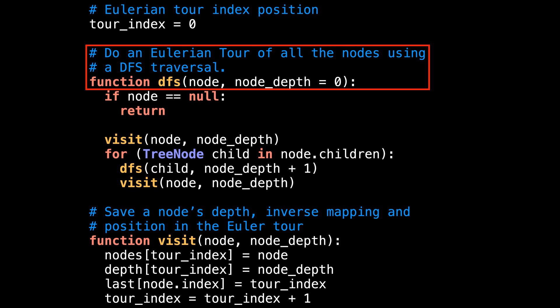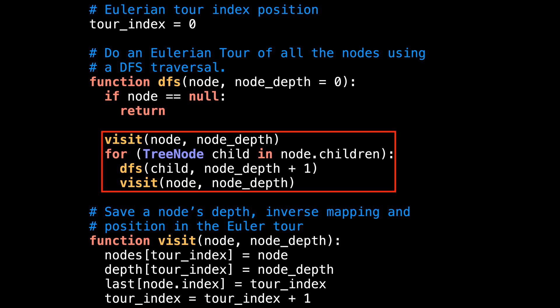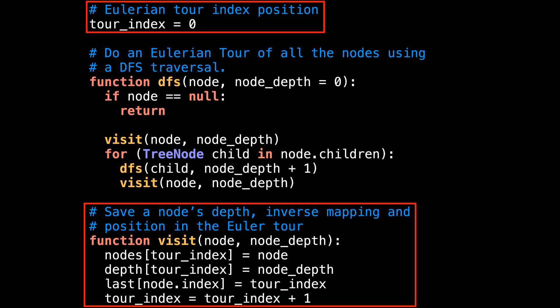The depth first search method is the one that actually performs the Eulerian tour. As parameters, it takes the current node and the depth of the node. When the current node becomes null, we know that we have reached our base case and can return. Otherwise, visit the current node and iterate over all its children recursively. The inner visit function call is interesting. What it says is after visiting the subtree, revisit the current node. This is essential to get the desired Eulerian tour effect to traverse the tree as expected.